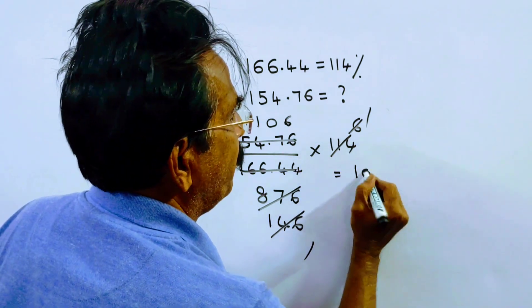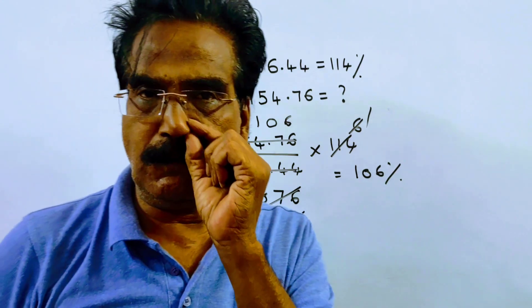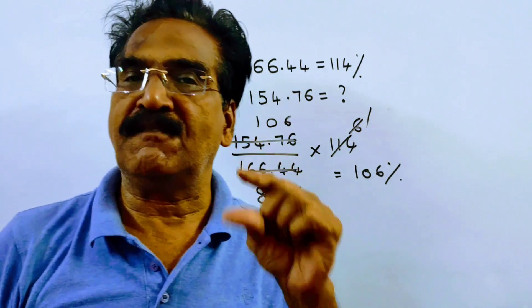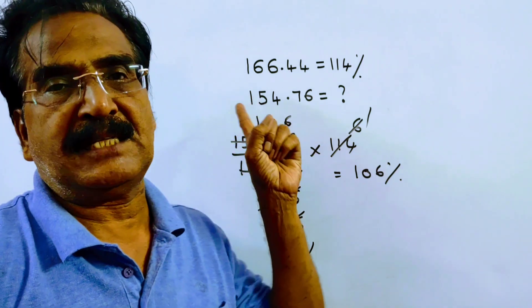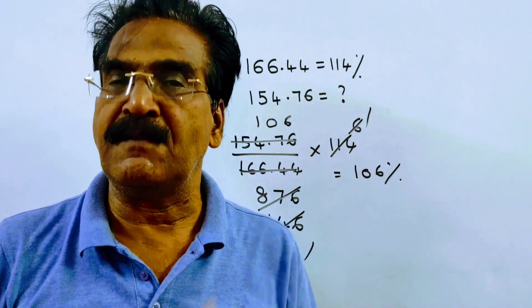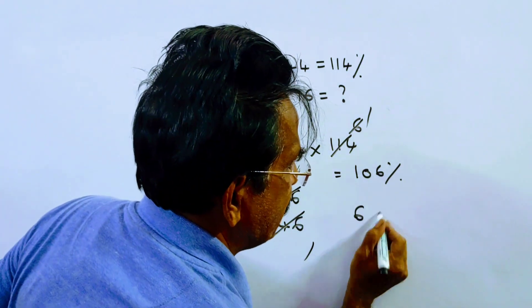So friends, 154.76 is equal to 106% of the cost price. That means if it were sold at Rs. 154.76, there will be a profit of 6% friends, 6%.